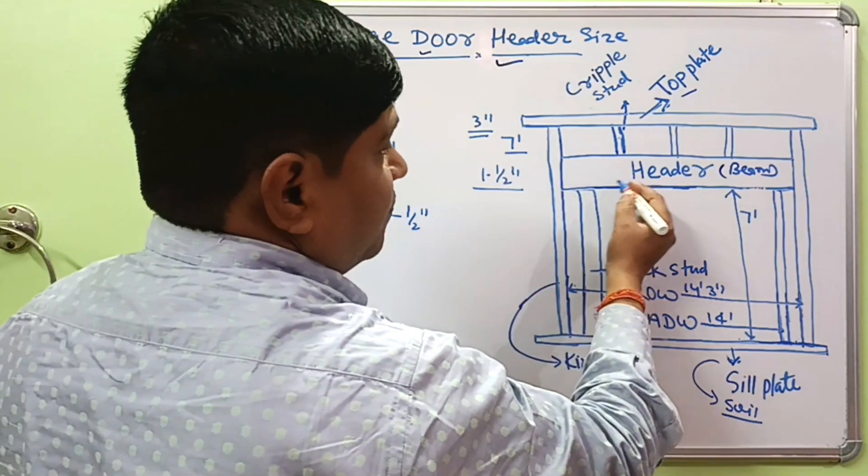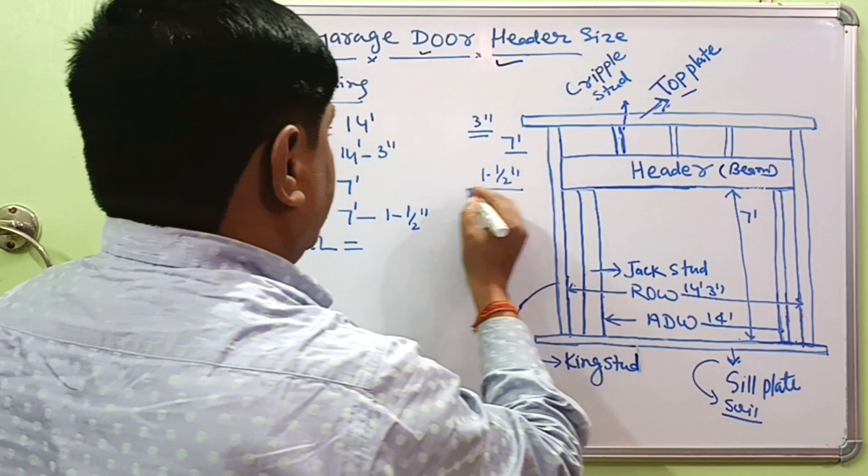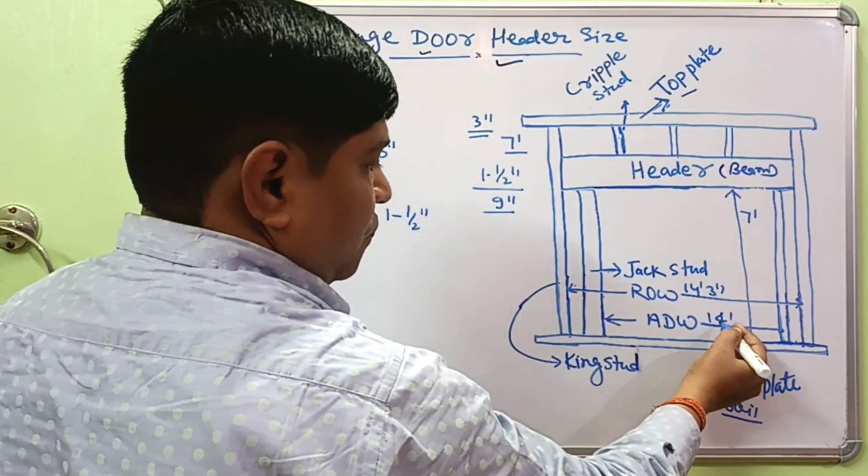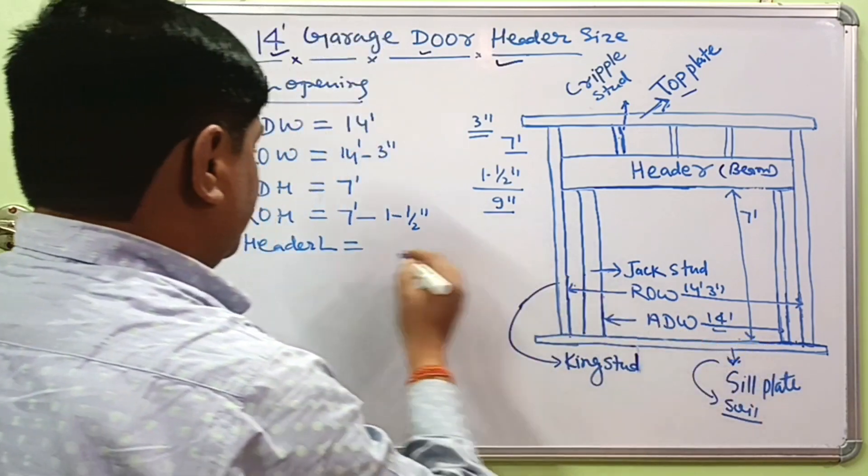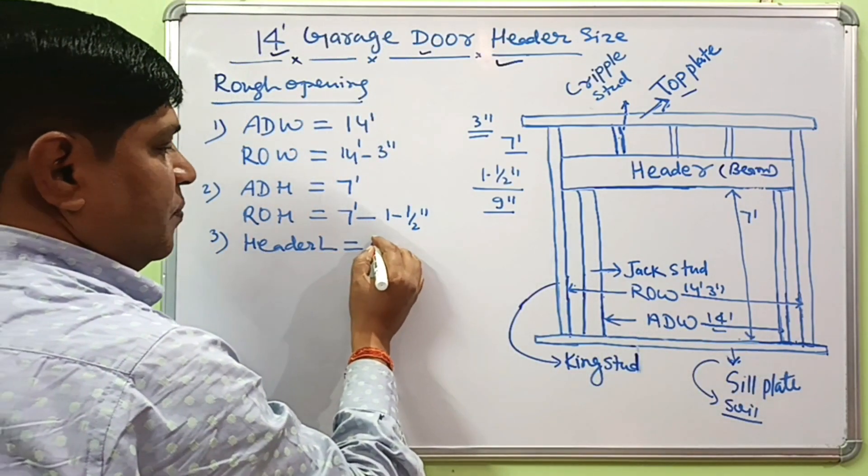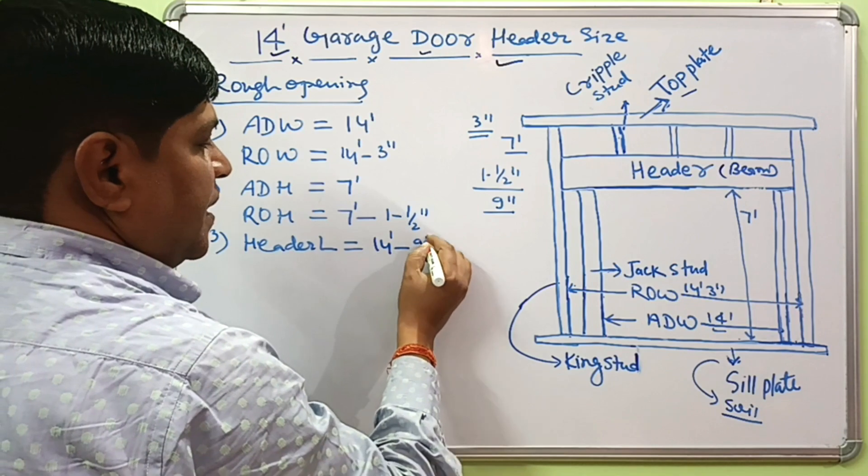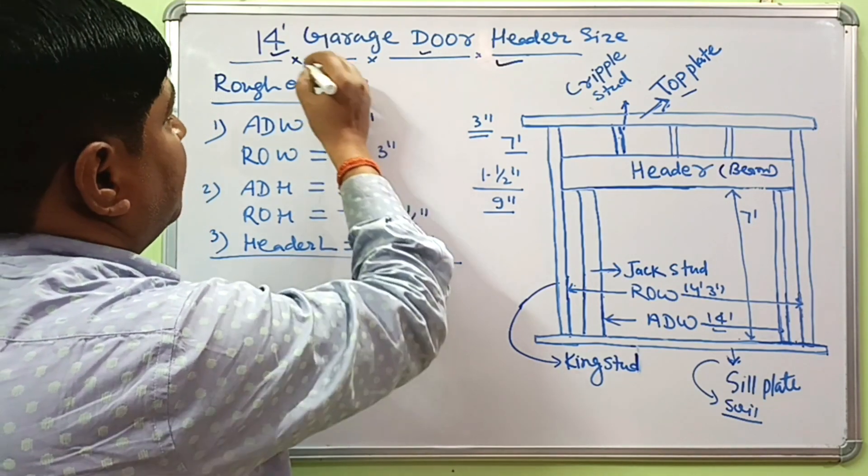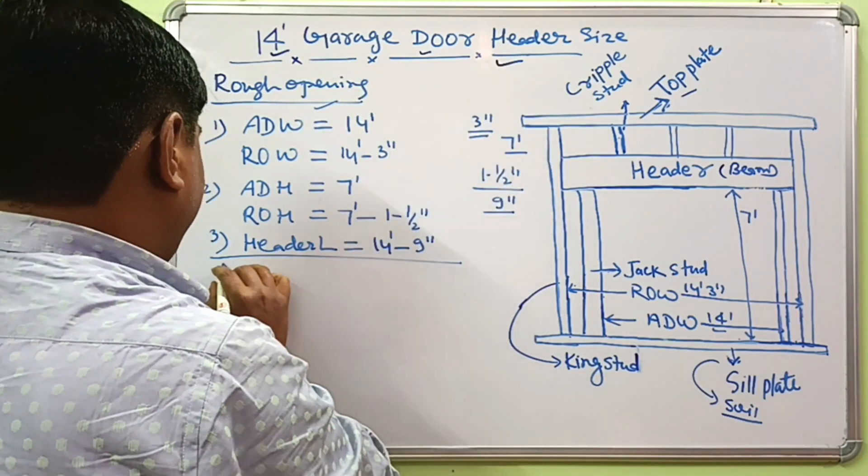The header length, which is placed over the opening, is generally 9 inches longer than the actual door width. The actual door width here is 14 feet, so the header length will be 14 feet 9 inches. Now this is the rough opening required for installation of a 14-foot garage door, and now we'll find the header size.